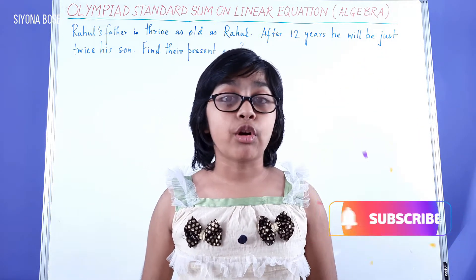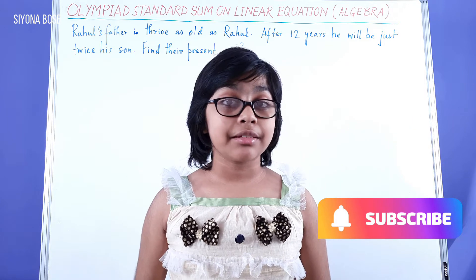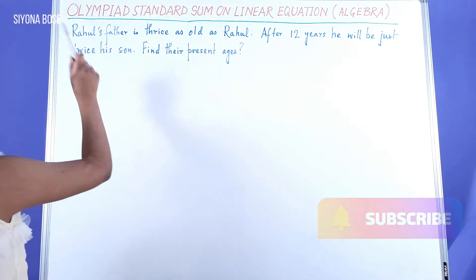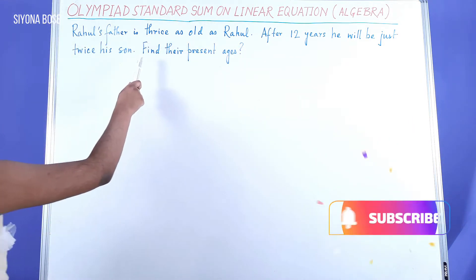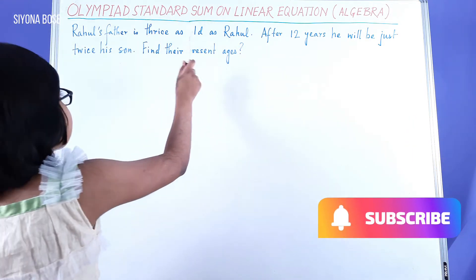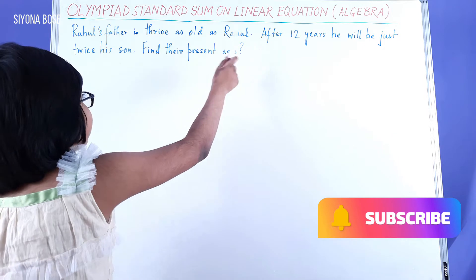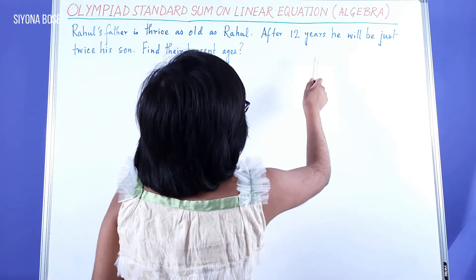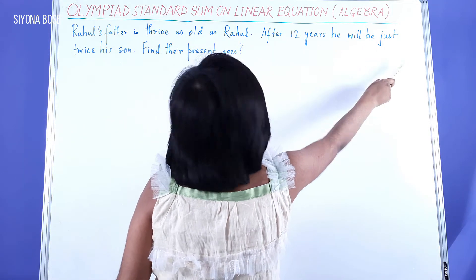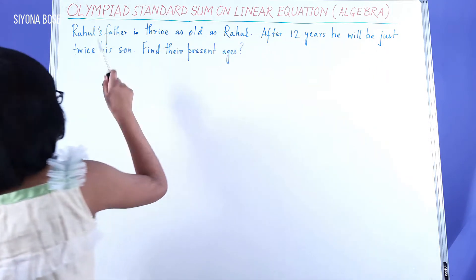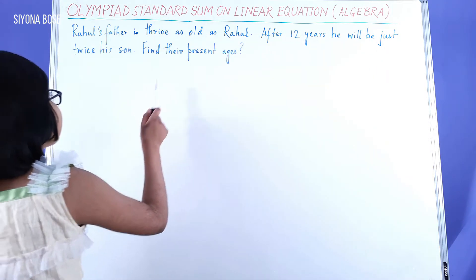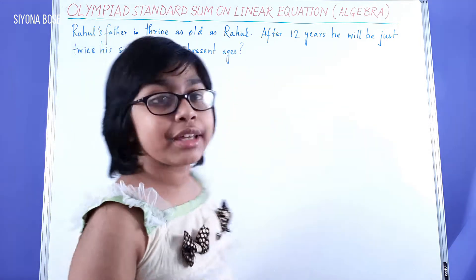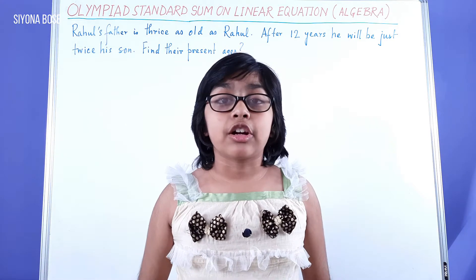I'm going to read the sum before we begin. Rahul's father is thrice as old as Rahul. After 12 years, he will be just twice his son. Find their present ages.